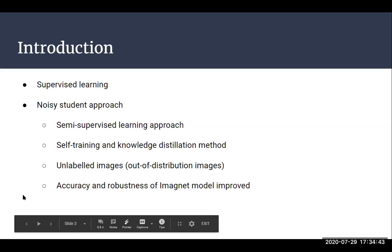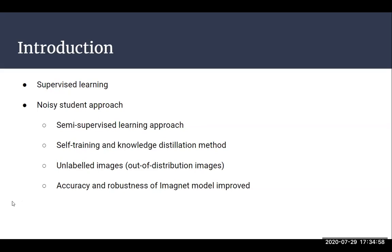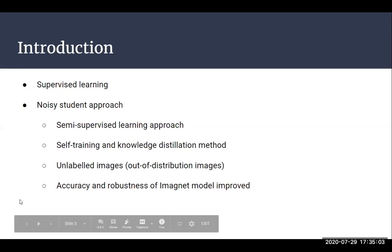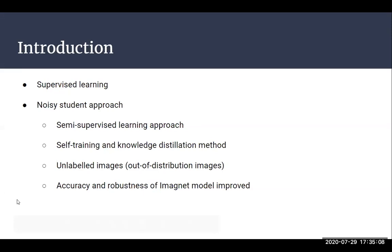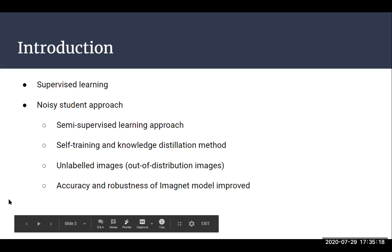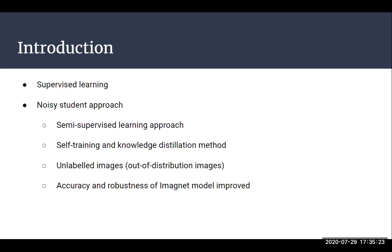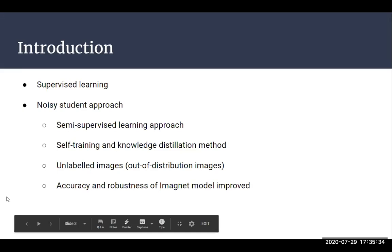Generally, the vision models that we use today are still trained using the supervised learning approach, which requires a large amount of labeled images. But in this paper, the author has proposed a new approach — a Noisy Student approach — which uses unlabeled images that are present in an abundant amount. This approach is based on semi-supervised learning and is an extension of self-training and knowledge distillation. The unlabeled images used are mostly out-of-distribution images. By using this approach, the accuracy and robustness of the ImageNet model is improved.